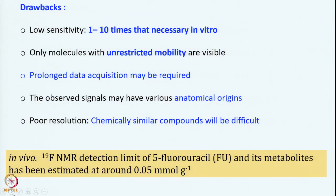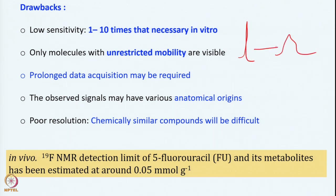Some drawbacks of in vivo drug metabolism studies: generally it is very insensitive — sensitivity is 1 to 10 times less than in vitro concentration. Another big problem is that since drug metabolites are not freely tumbling in solution, there is restricted mobility because of the surroundings — coming from different proteins, lipids, muscle, and so on. Since the mobility is restricted, the lines are going to be broad. So if in vitro we have a sharp line, in vivo we can have a broad line. That is one of the limitations of doing experiments in vivo because of restricted tumbling.